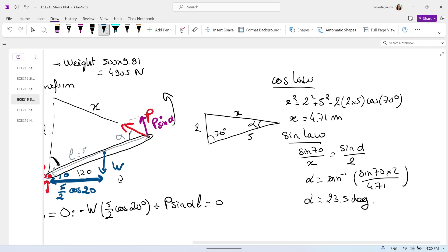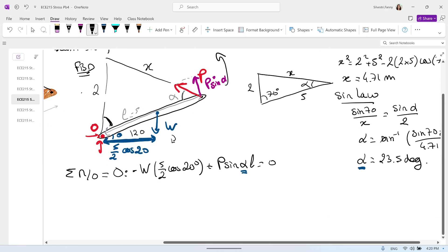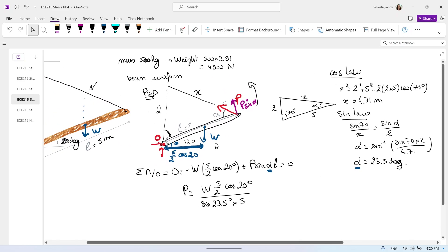So this is the value that we were missing that we will add to our equations. And we have also L. So let's now find P. We have P equal W 5 divided by 2 cosine 20 degrees. And we divide by sine 23.5 degrees times the distance L. That is 5. And remember the W. That was the 4.9.